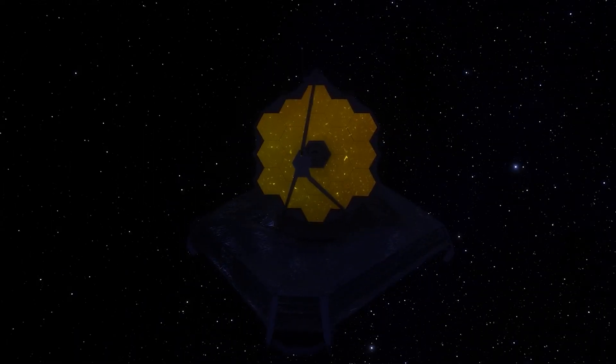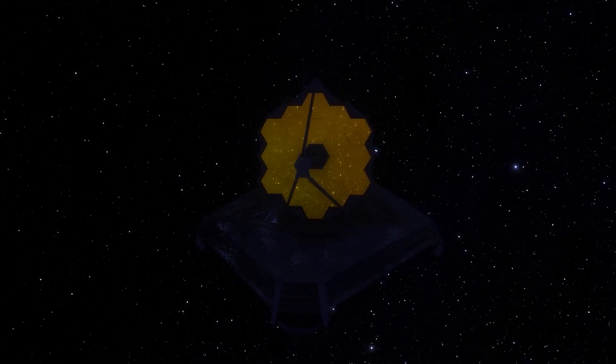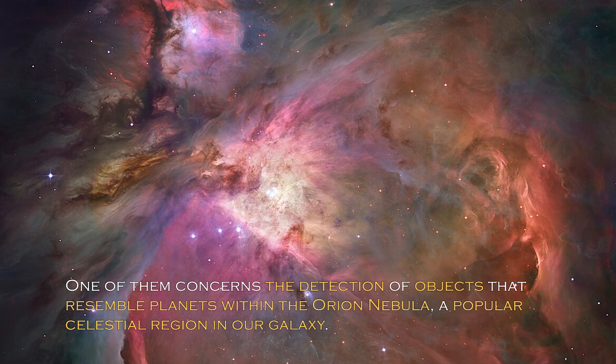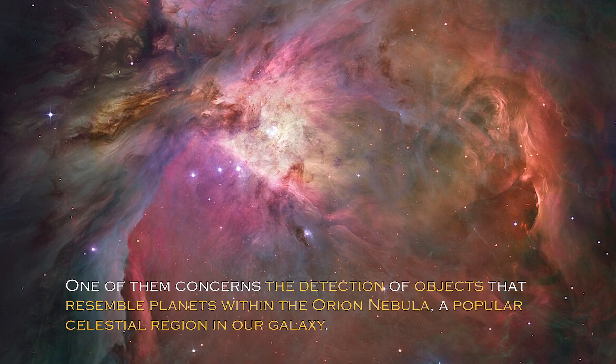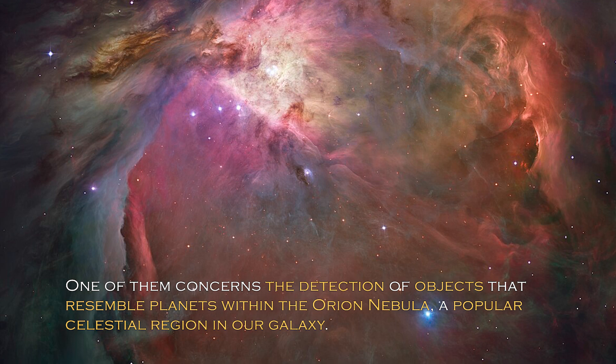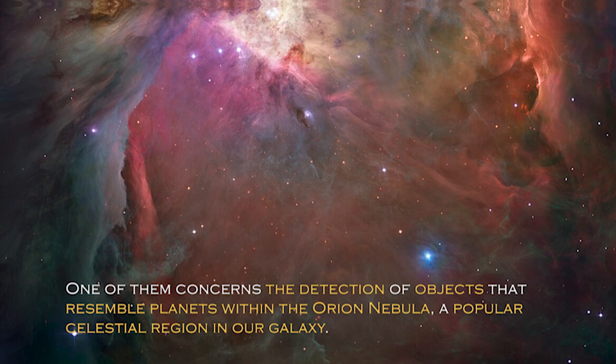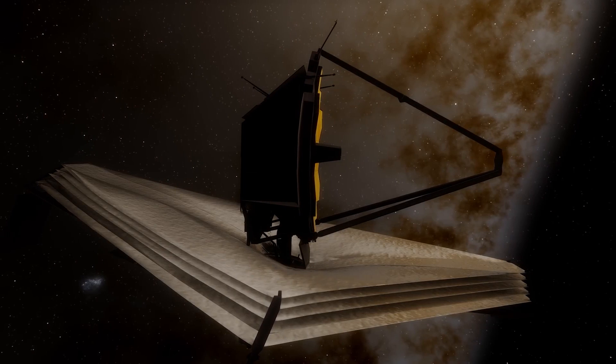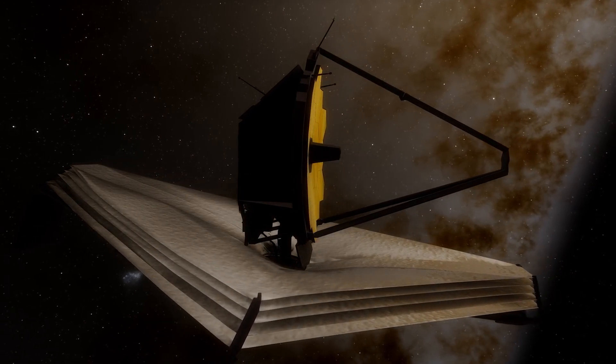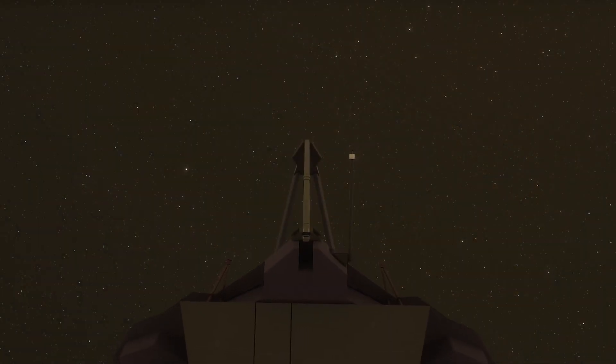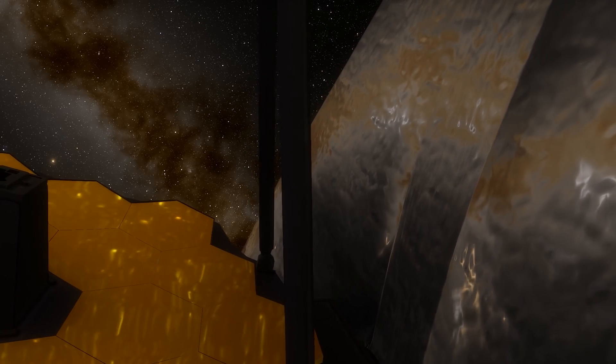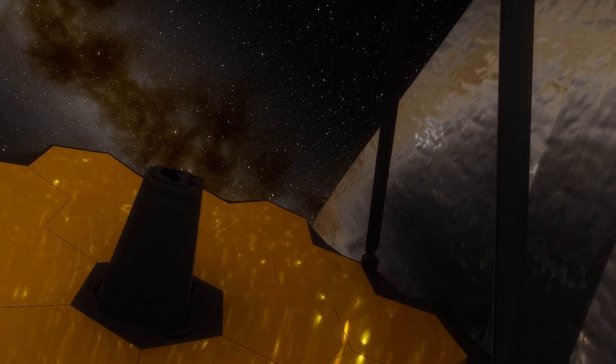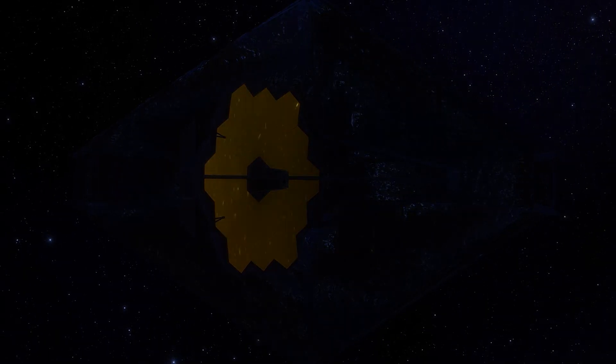The James Webb telescope has recently made remarkable discoveries. One of them concerns the detection of objects that resemble planets within the Orion Nebula, a popular celestial region in our galaxy. Previous studies had not revealed such objects in this cosmic cloud of dust and gas until the James Webb made their detection possible. These discoveries are just a sampling of several interesting findings that the James Webb telescope has recently unleashed.